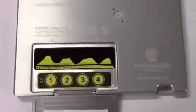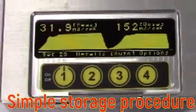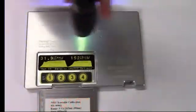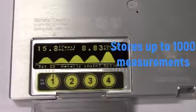Data is saved using a simple but intuitive on-screen interface and function buttons. The ILT CureRight meters can save up to 1,000 measurements in the device memory.